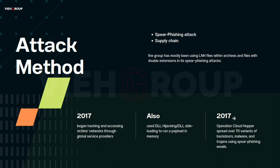Operation Cloud Hopper deployed over 70 variants of backdoor malware and trojans using spearphishing emails. The attackers used scheduled tasks or service utilities to persist on Windows systems, and then installed malware and hacking tools to access systems and steal data. APT10 was also observed exploiting vulnerabilities including ProxyLogon and ProxyShell in Microsoft Exchange Server. Around mid-2022, they were seen carrying a ransomware payload to hide their espionage-related intentions.